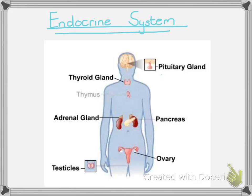Hi Matrix, today we are going to be looking at the endocrine system, which is on page 179 in the textbook. This system complements the nervous system in that the nervous system is responsible for physical coordination, whereas the endocrine system is responsible for chemical coordination.